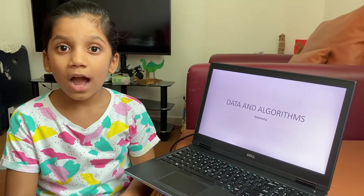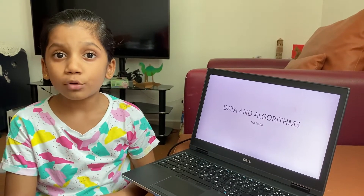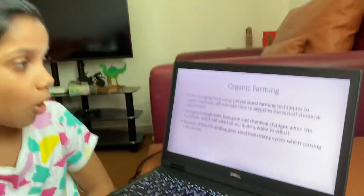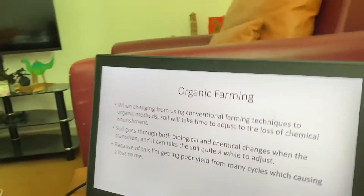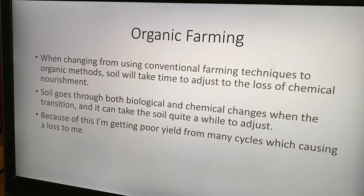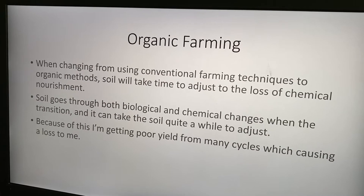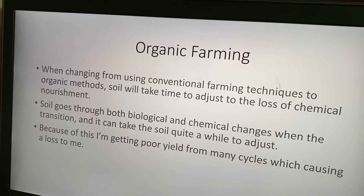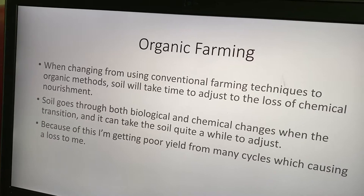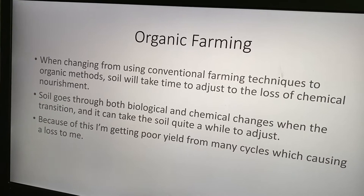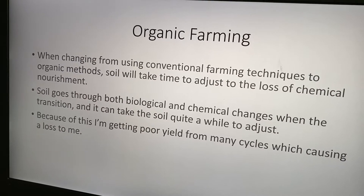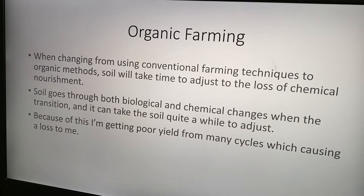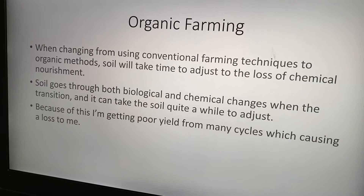As mentioned in the challenge, I will assume that I am doing organic farming, but I am not getting good yields. Let's see why. When changing from using conventional farming techniques to organic methods, soil will take time to adjust to the loss of chemical nourishment. Soil goes through both biological and chemical changes during the transition, and it can take the soil quite a while to adjust. Because of this, I am getting poor yield from many cycles, which causes a loss to me.